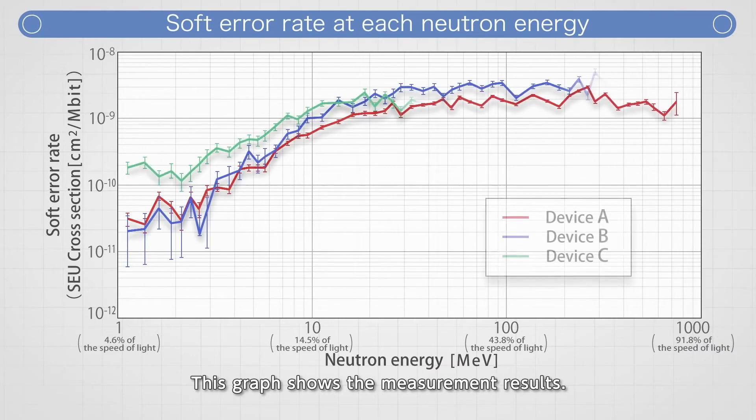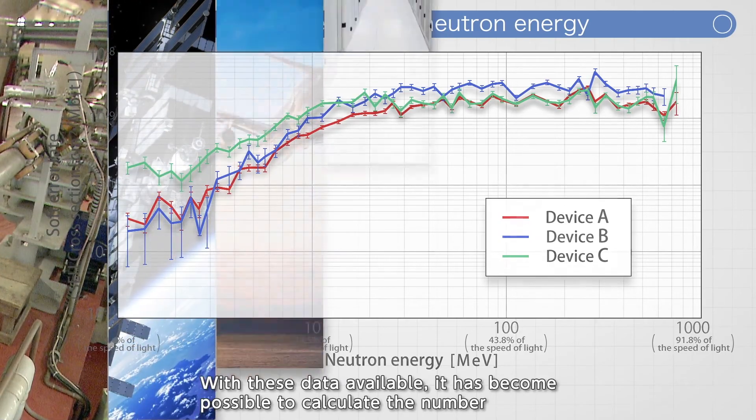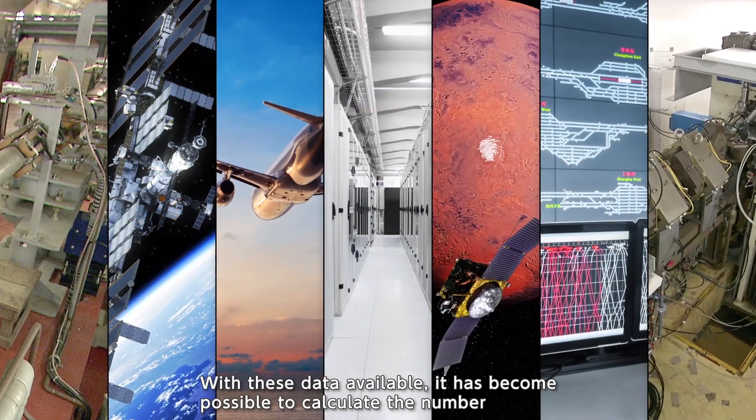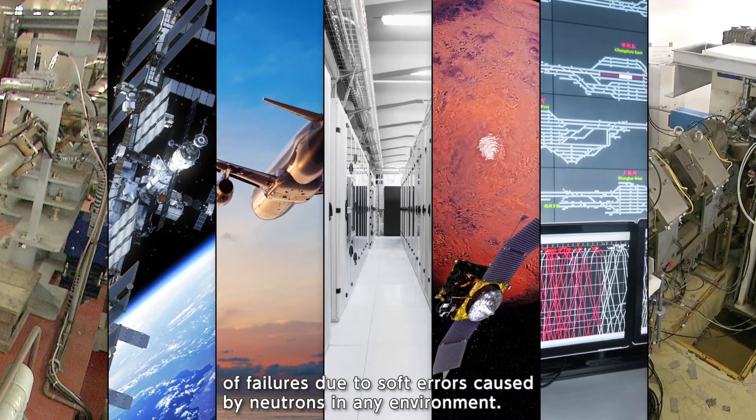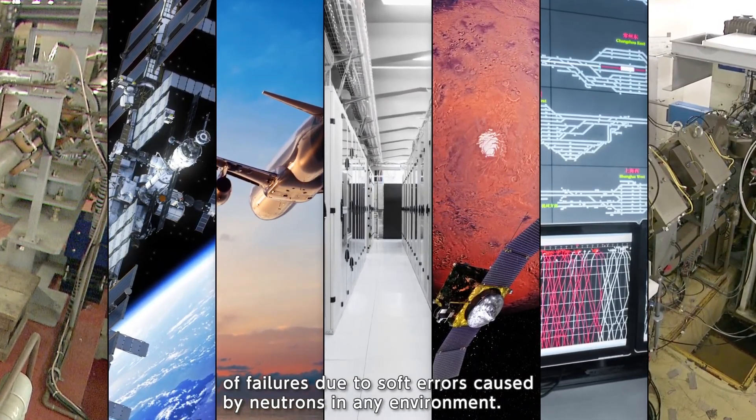This graph shows the measurement results. It can be seen that soft error rates were measured at continuously varying energy at high resolution. With these data available, it has become possible to calculate the number of failures due to soft errors caused by neutrons in any environment.